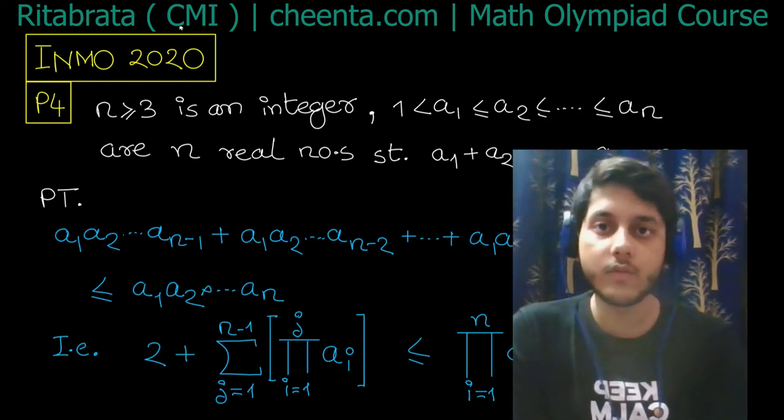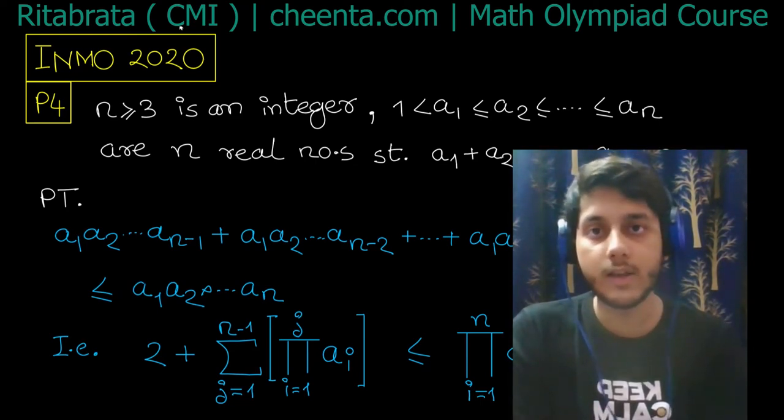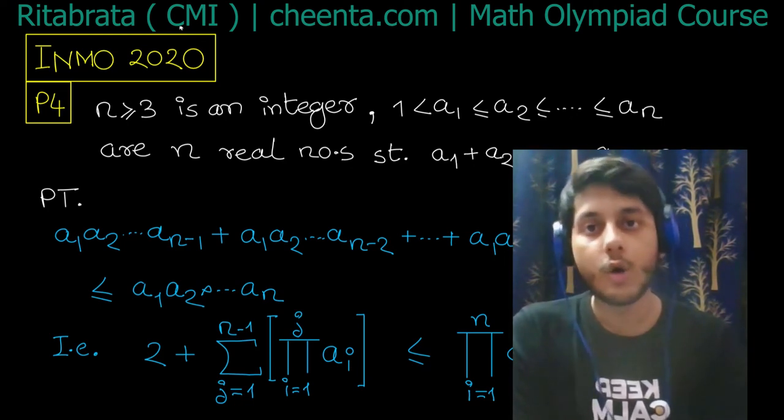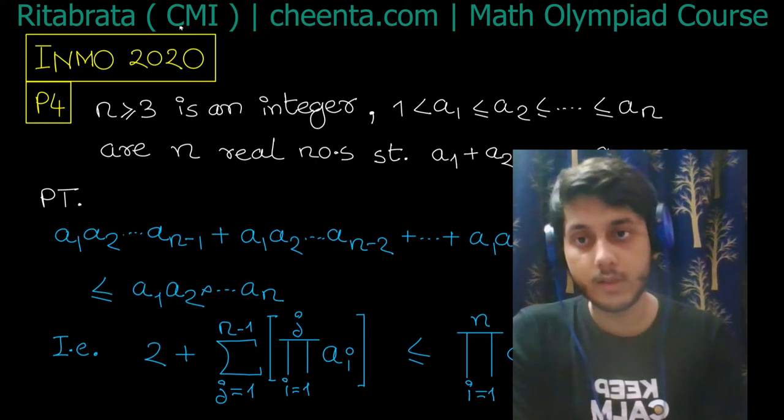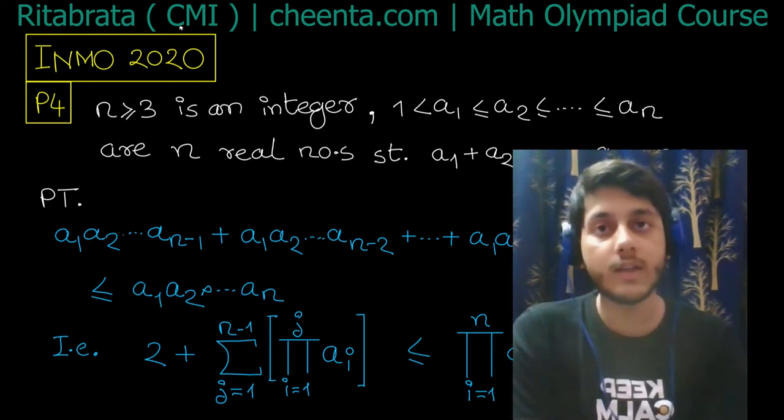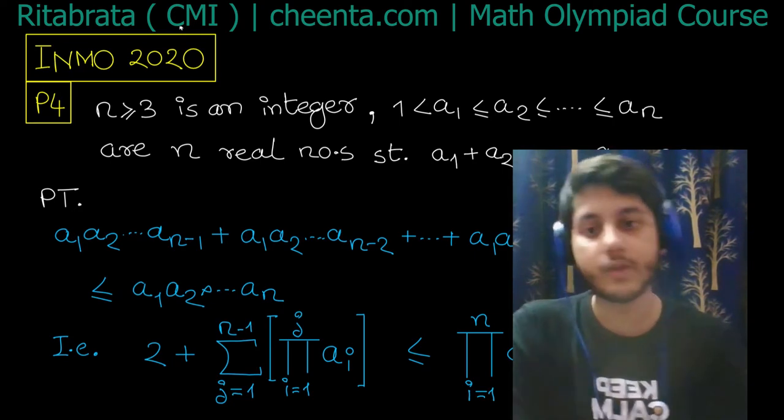The problem is: n ≥ 3 is an integer. My sequence a₁, a₂, ..., aₙ is ordered in non-decreasing order. All aᵢ are strictly greater than 1, and a₁ + a₂ + ... + aₙ = 2n. I have to prove that 2 + a₁ + a₁a₂ + ... + a₁a₂...aₙ₋₁ ≤ (1 + a₁)(1 + a₁a₂)...(1 + a₁a₂...aₙ₋₁) ≤ a₁a₂...aₙ. Let's do this.